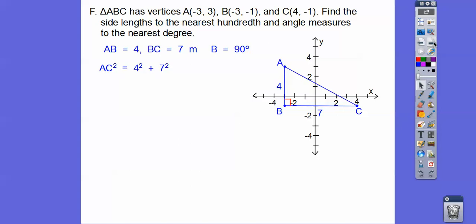And then we can get AC by using the Pythagorean theorem. So we get about the square root of 65, which is about 8.06. So it said round to the nearest hundredth. That's two decimal places. So about 8.06. All right. Now it also said find the angle measures. Well, once we find this angle, we can take it off of 90 to figure out this angle because that's 90 also.